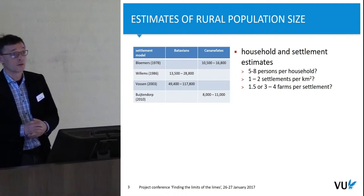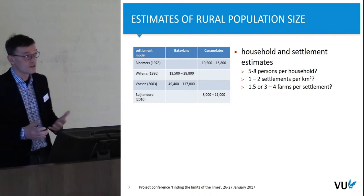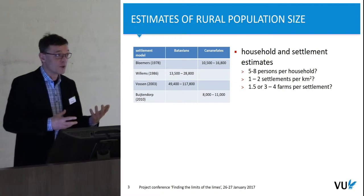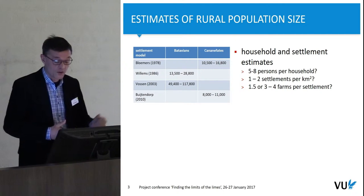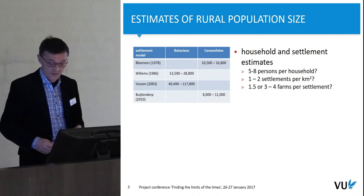Nico, in his first talk, already suggested that the number of people might be somewhere around 40,000 for the Batavians. The low figure was based on archaeological site data known in the early 1980s, and the 2003 estimate is actually based on a very densely populated micro-region that was extrapolated to the rest of the area, resulting in a much larger number of people.